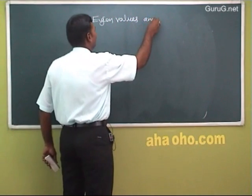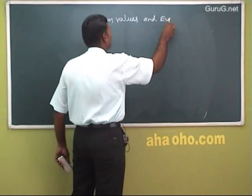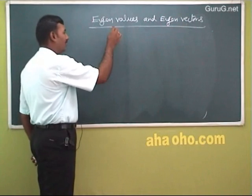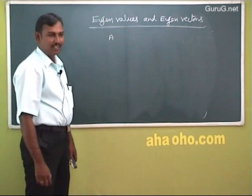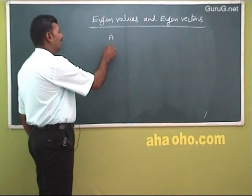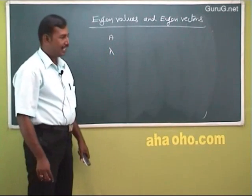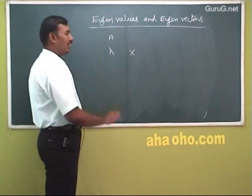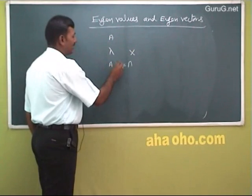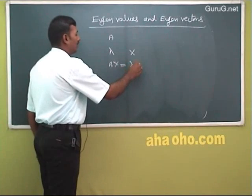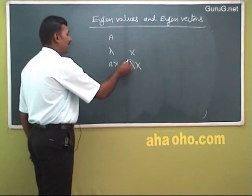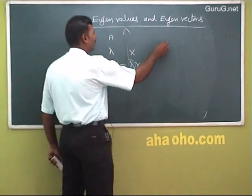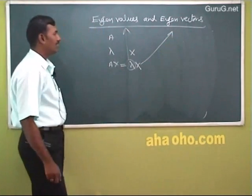Eigenvalues and eigenvectors — this is a new topic. A is a square matrix of any order. If there exists a scalar lambda and a non-zero column vector x such that Ax equals lambda x, then lambda is called the eigenvalue and x is called the eigenvector.